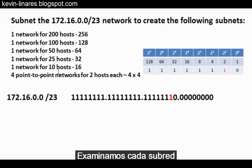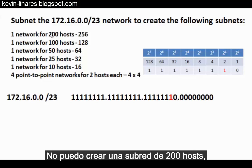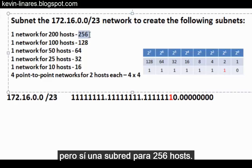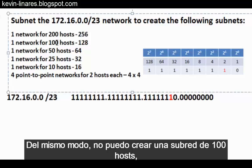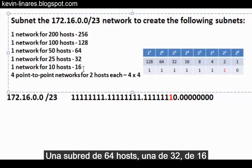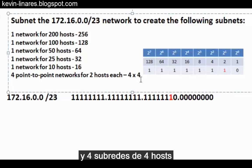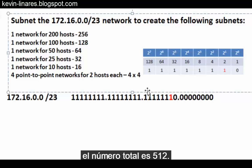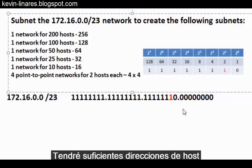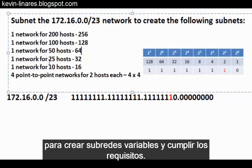Looking at each subnet we need to create: I cannot create an exact 200-host subnet, but I can create a subnet for 256 hosts. That number does not reflect the usable hosts, but the total number of addresses in the subnet. Similarly, I cannot create exactly a 100-host subnet, but I can create a 128-host subnet. A 64 subnet, a 32 subnet, a 16 subnet, and four host subnets of four will satisfy these requirements. Adding up 256, 128, 64, 32, 16, and four subnets of four, the total is 512 — exactly enough addresses to create these subnets and meet the requirements.